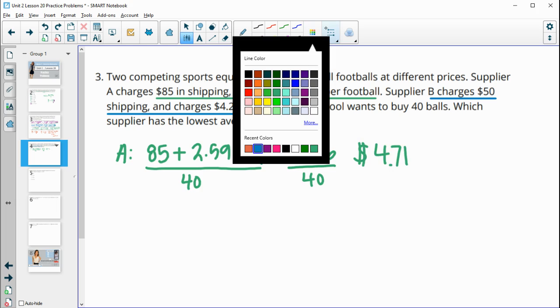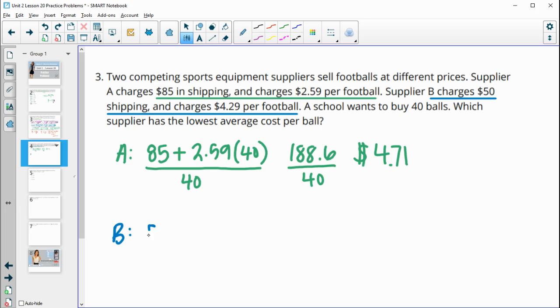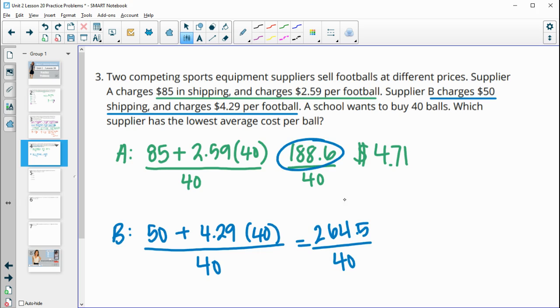So $4.71. Then for supplier B, we can do this same thing. This is $50 shipping, but then the price per football increases to $4.29 per football. And remember we're buying 40. So then we'll take the total cost divided by 40. So the total cost for supplier B is $264.5. And then we'll divide by 40. Well, that's going to be higher because the total cost was more. So $188 divided by 40 is going to be less than $264.5 divided by 40. So supplier A would be the answer here.